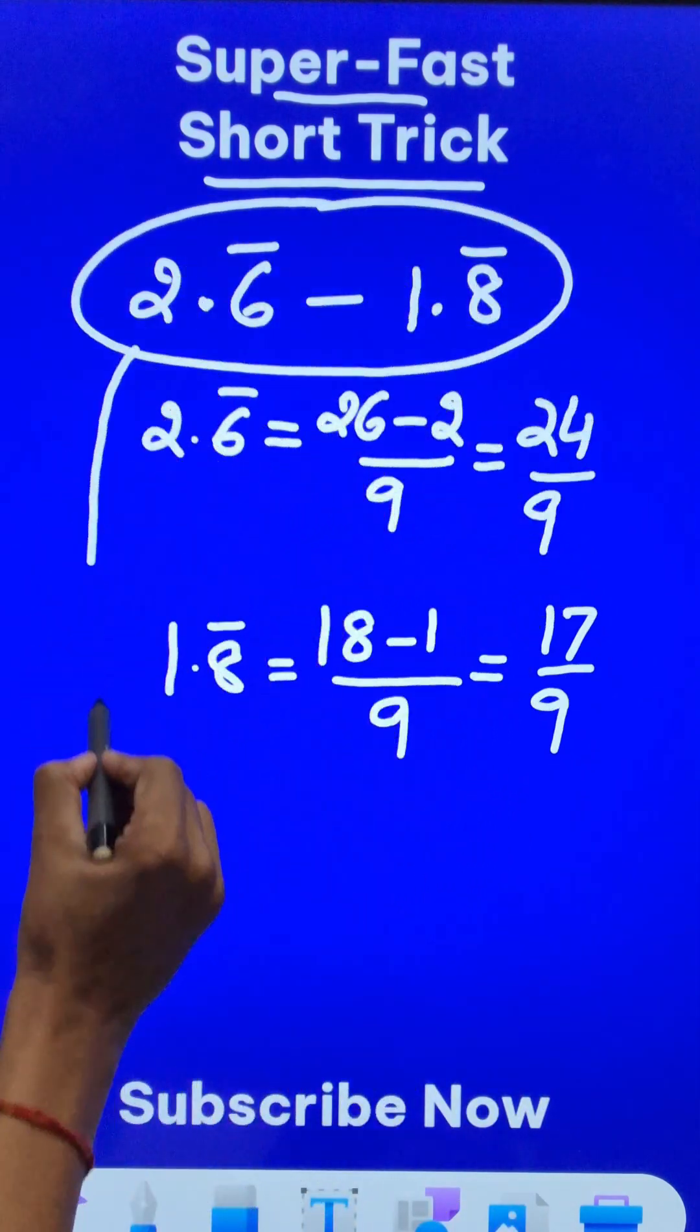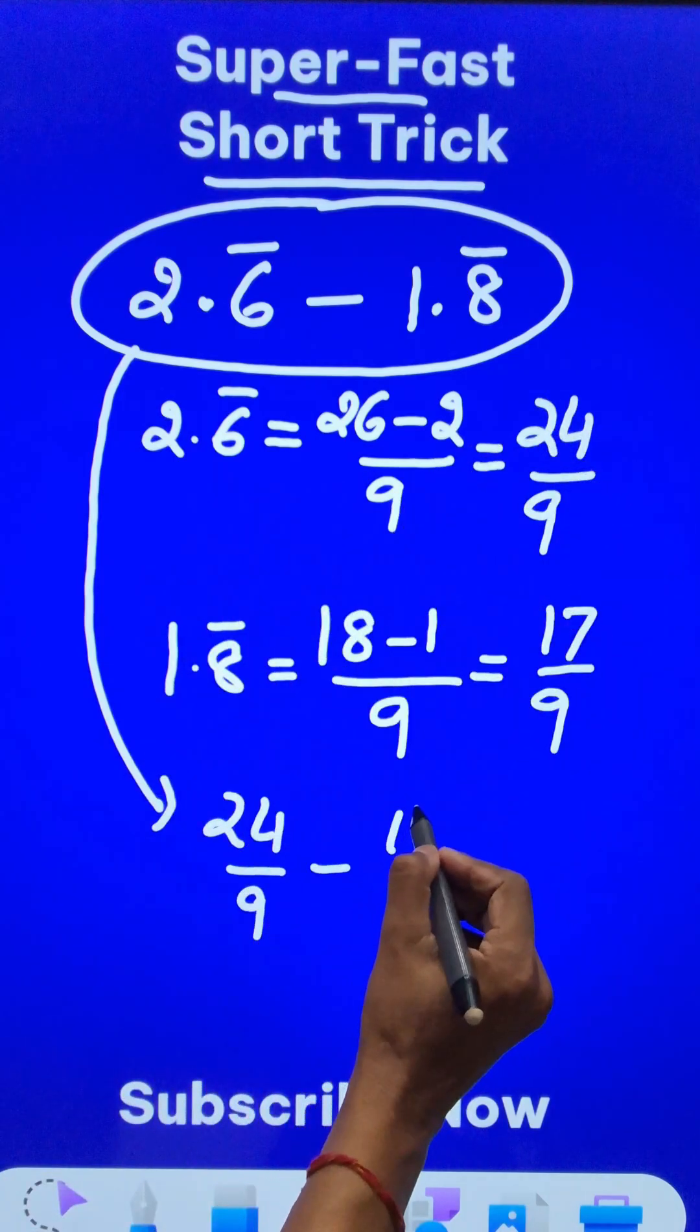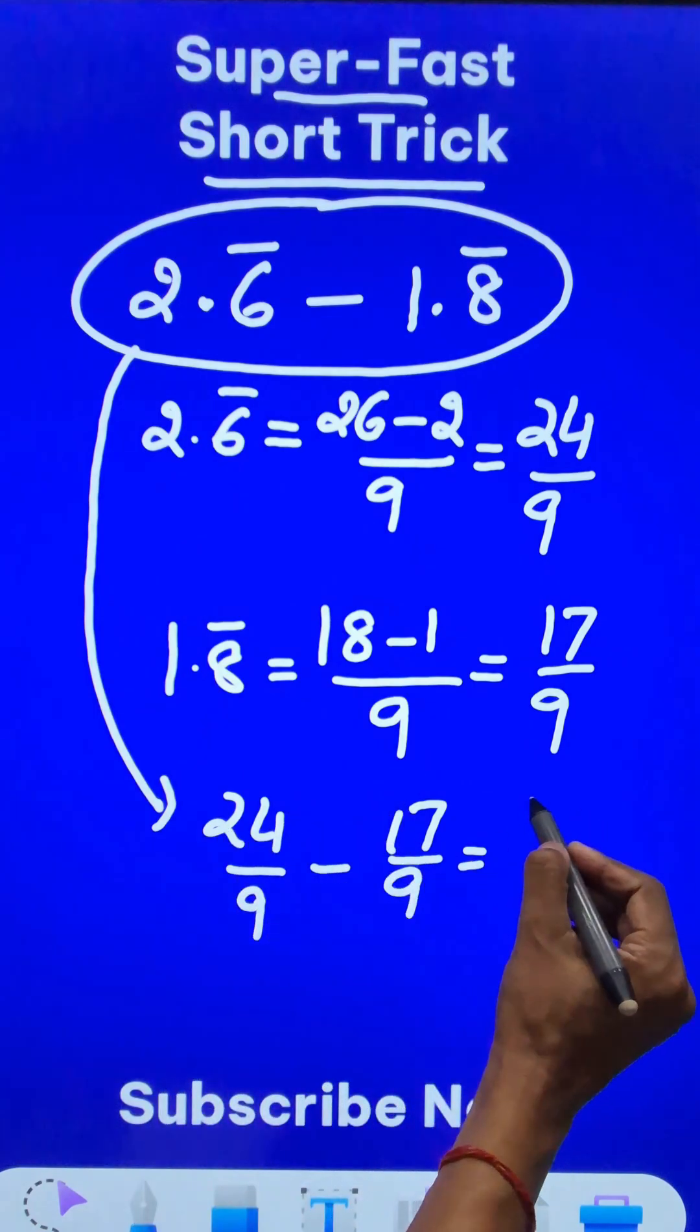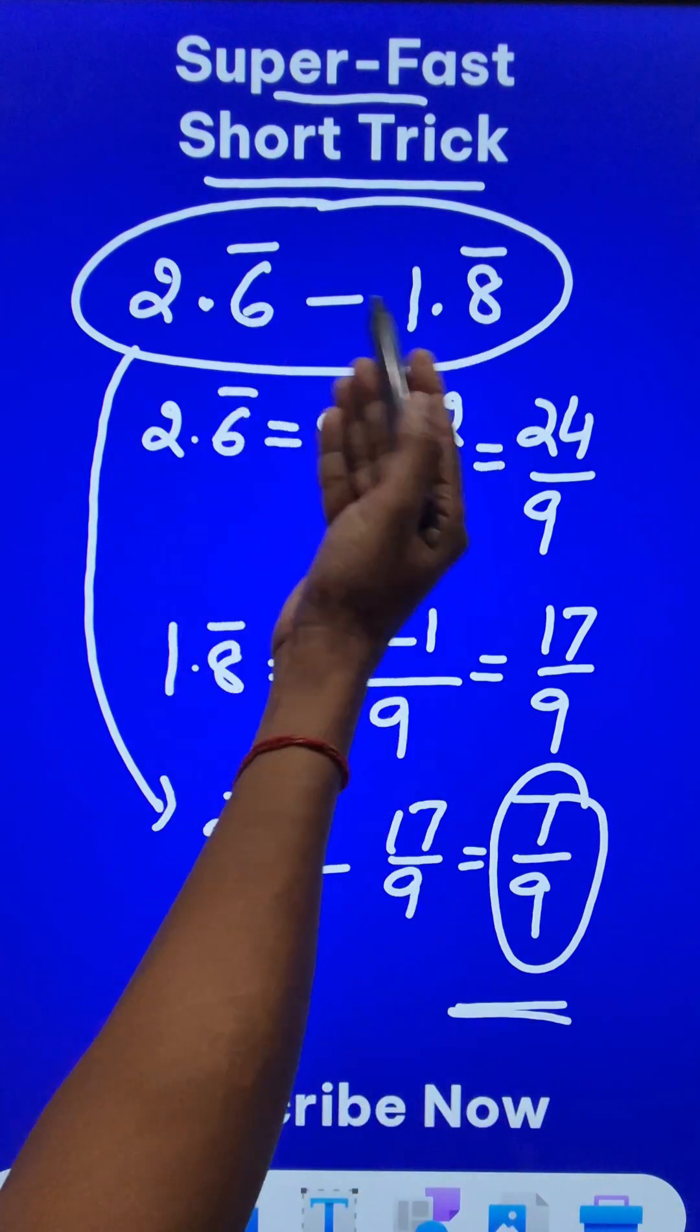So what is the final answer for my question? This becomes 24 upon 9 minus 17 upon 9. And the answer for the question comes out to be 24 minus 17 is 7. So 7 upon 9 is the rational representation of this subtraction problem.